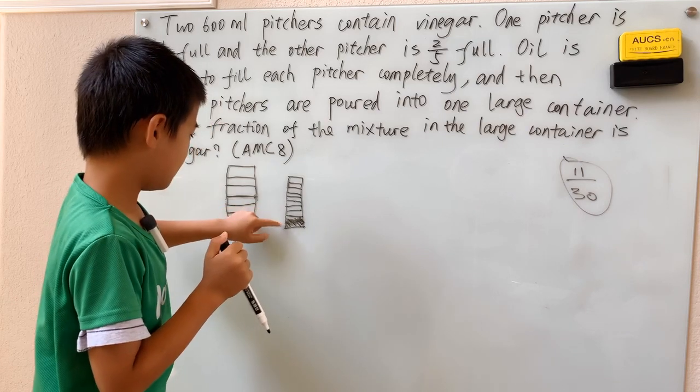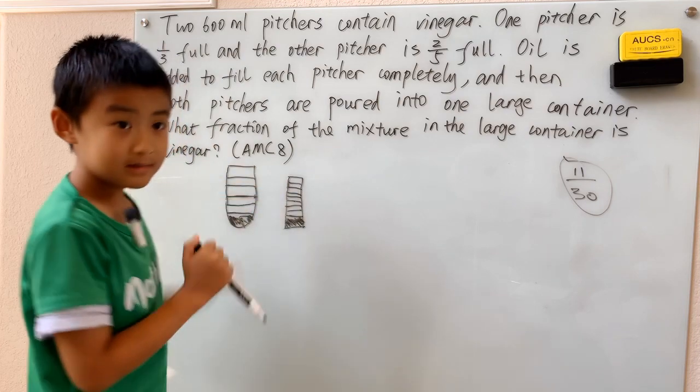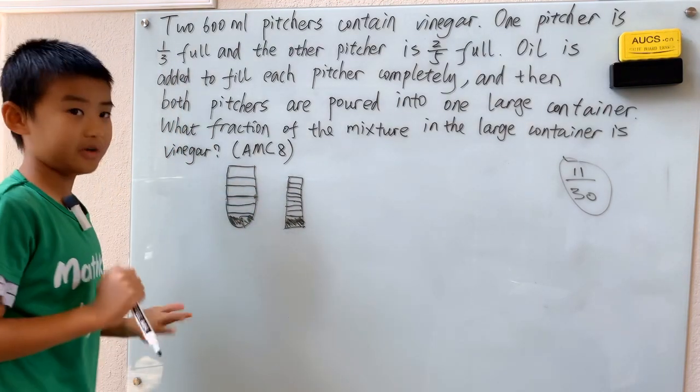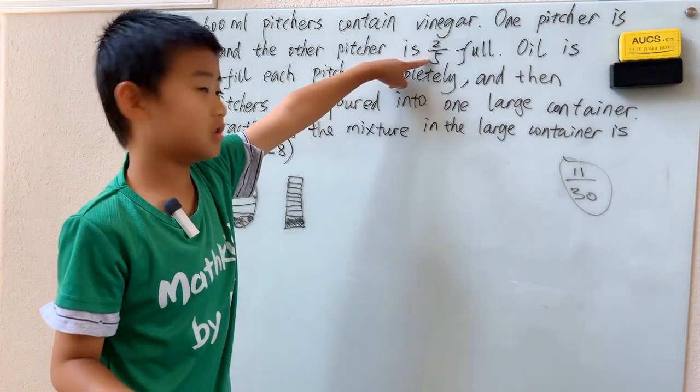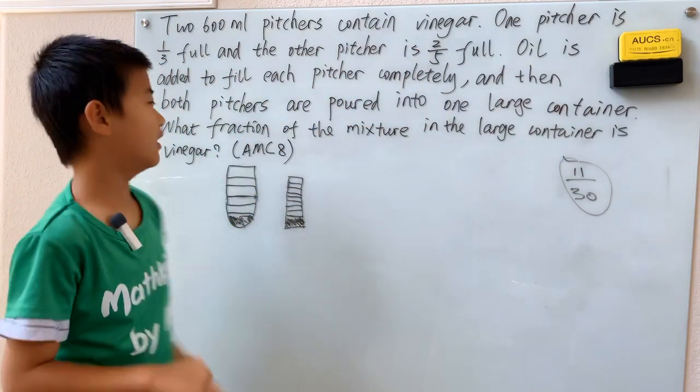So now we see this is two, two out of one, two, three, four, five, six, seven, eight, nine, ten, two-tenths, which simplifies to one-fifth, which is half of that.